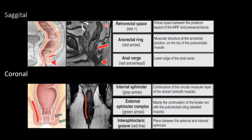These are T2-weighted sagittal and coronal plane images. In the sagittal plane, we can see the retrorectal space, anorectal ring, and anal verge — the lower edge of the anal canal. In the coronal plane, we can see the internal sphincter, which is the continuation of the circular muscular layer of the rectum, and the external sphincter complex, which is mainly the continuation of the levator ani muscle with puborectalis, and the intersphincteric groove — the plane between the external and internal sphincter.